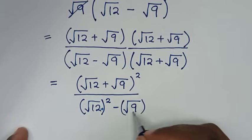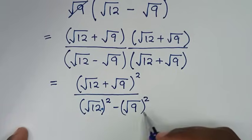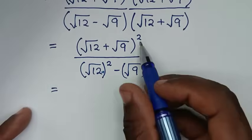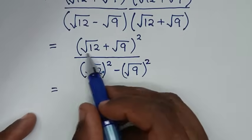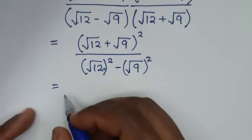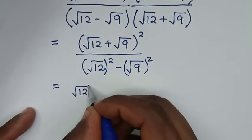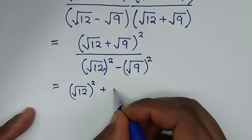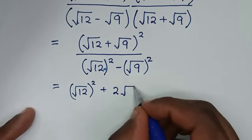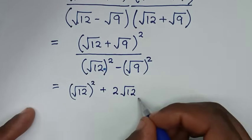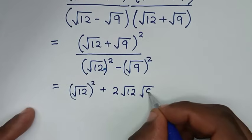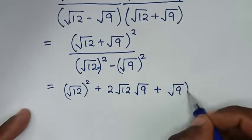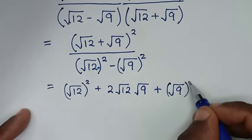Expanding the numerator using (a+b)²: it will be (square root of 12) squared, plus 2 times square root of 12 times square root of 9, plus (square root of 9) squared.